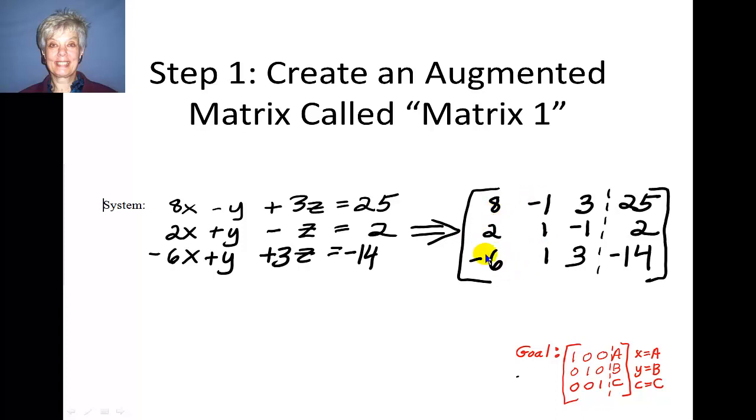Our goal is to change this around so that we end up with this matrix right here. The ones going down the diagonals, zeros everywhere else, and then the answers, that is, x equals whatever this number is, y equals whatever this number is, and z equals whatever this number is.